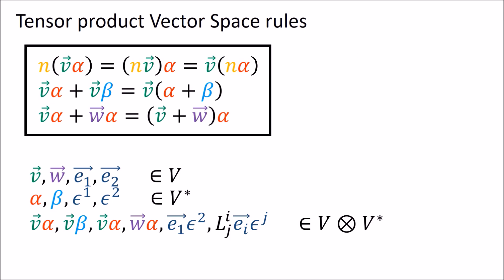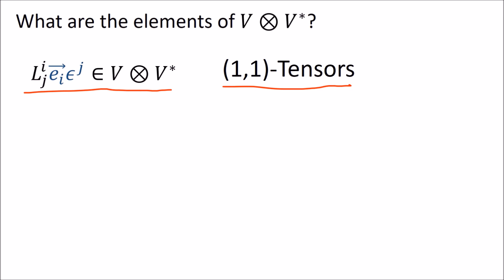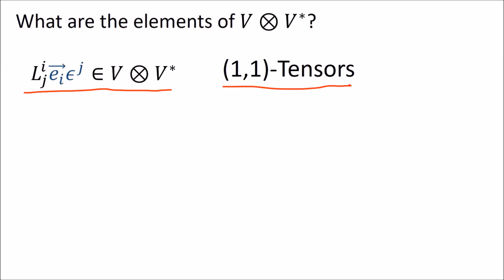The tensor product can refer to two different things: the tensor product of tensors — the 'little' tensor product that combines individual tensors — and the tensor product of vector spaces — the 'big' tensor product that combines entire vector spaces. So we've discovered the vector space V⊗V*, whose members are 1-1 tensors, or vector-covector pairs and their linear combinations. Vector components always have an upstairs index while covector components have a downstairs index.